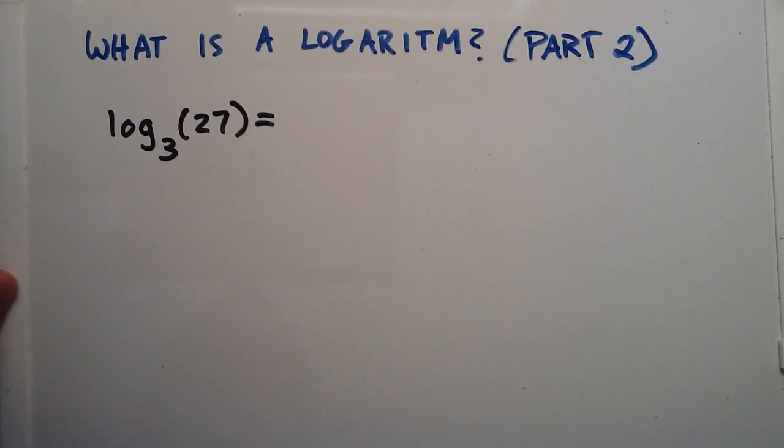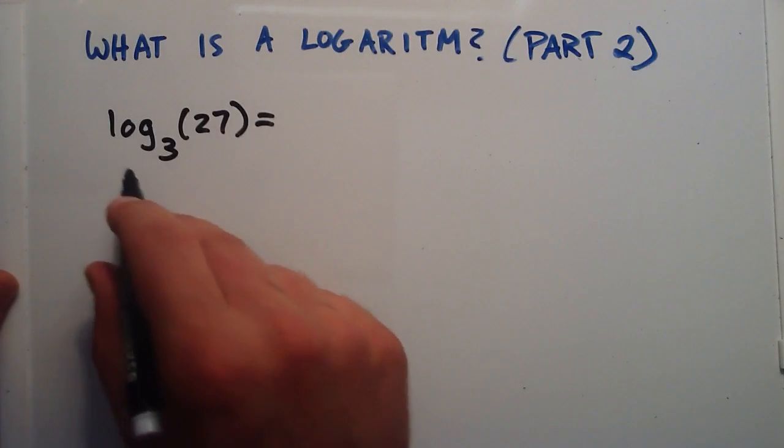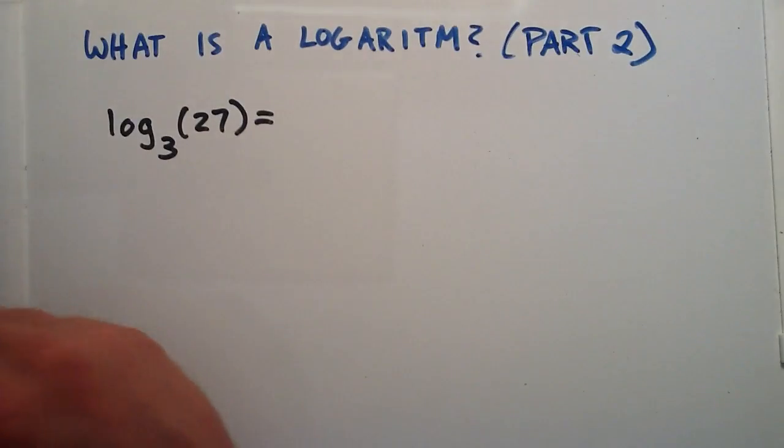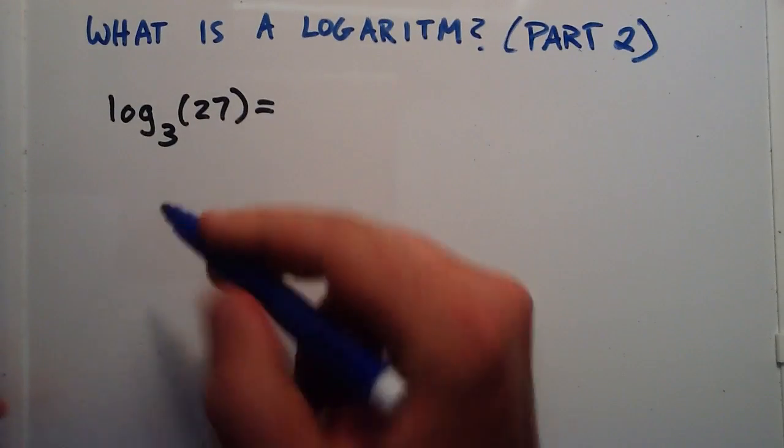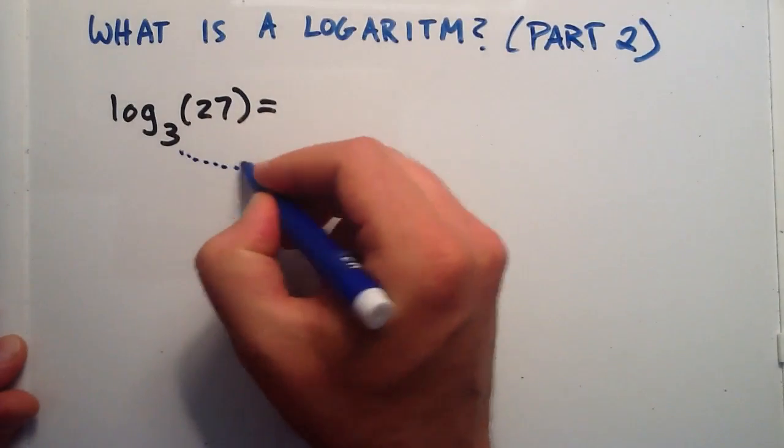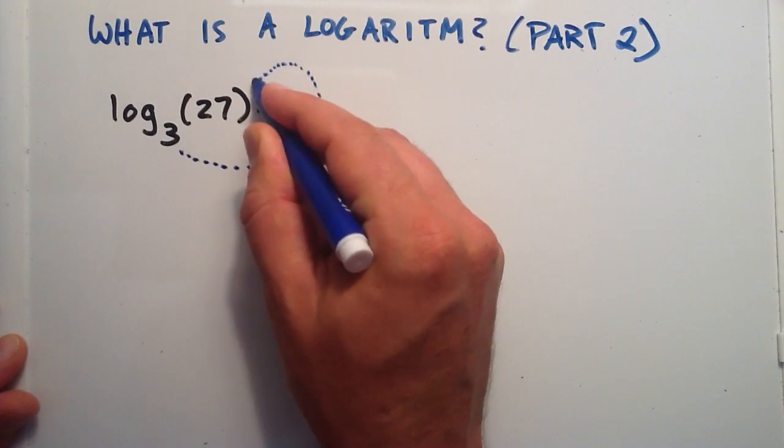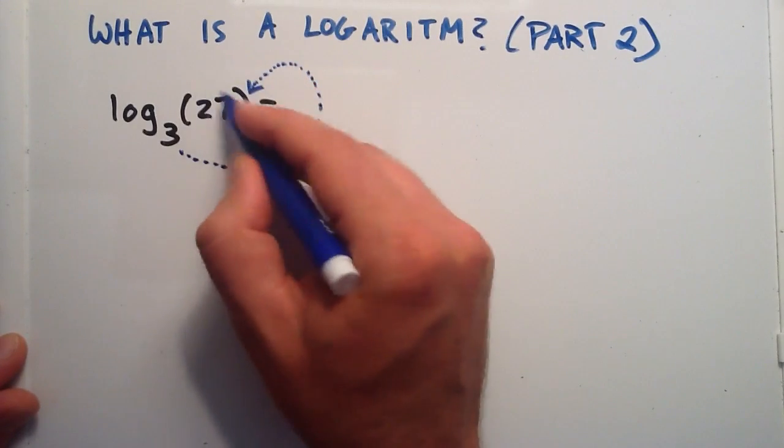So in my last video I explained to think of a logarithm as a scorpion. And it has a tail that starts at the base. And it comes and it wraps around the answer. And then the stinger comes back to the argument.